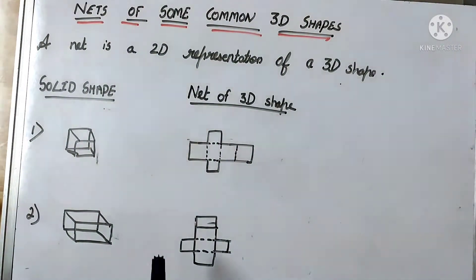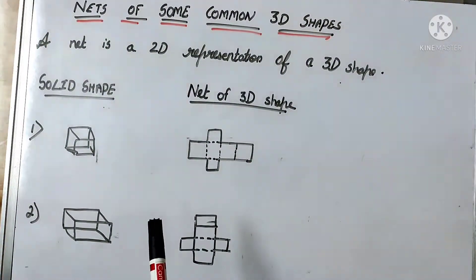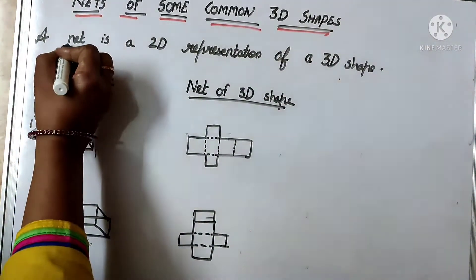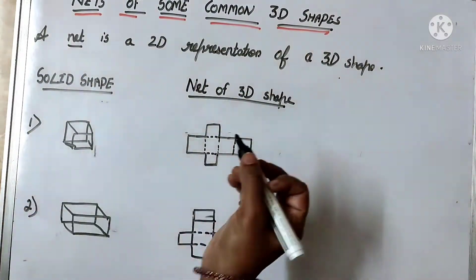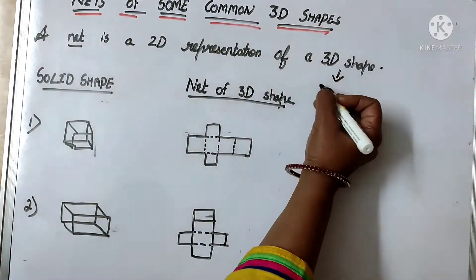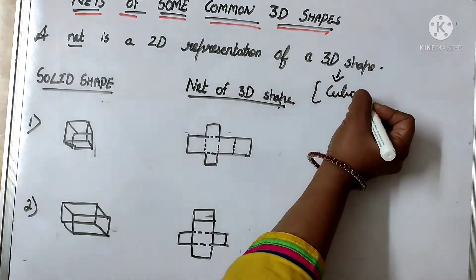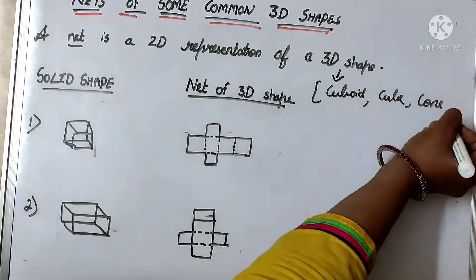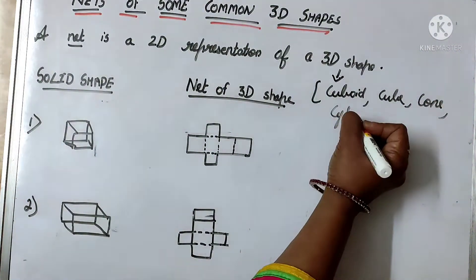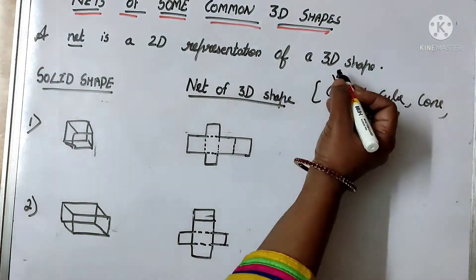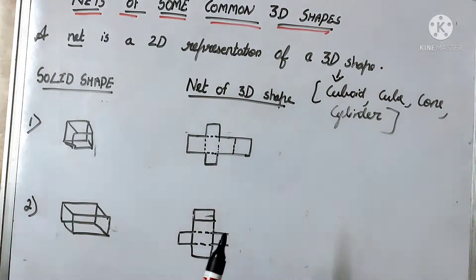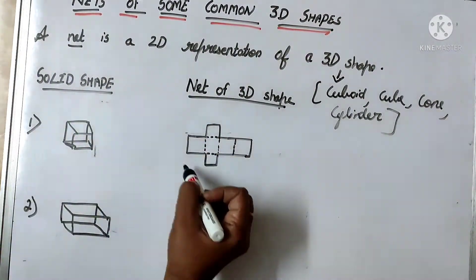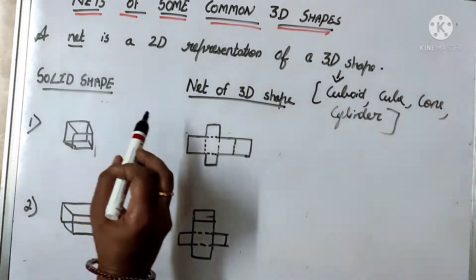Today we are going to discuss about nets of some common 3D shapes. Now what is a net? A net is a 2D representation of a 3D shape. You are all knowing what are the different 3D shapes — cuboid, cube, cone, cylinder — these are all three dimensional shapes. A net is a 2D representation that means how we can represent a 3D shape on a paper.